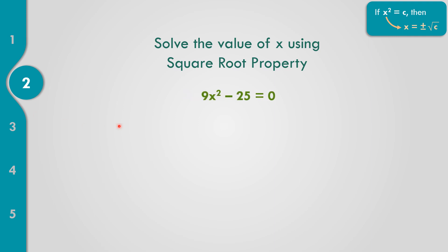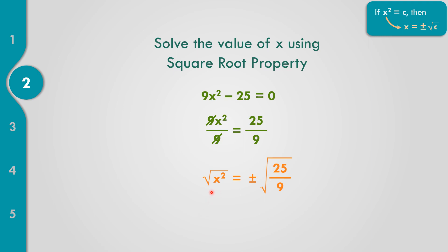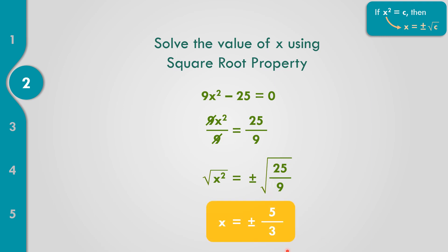Example 2: 9x squared minus 25 equals 0. Move negative 25 to the right — it becomes positive 25, giving 9x squared equals 25. Since the coefficient of x squared must equal 1, divide both sides by 9: x squared equals 25 over 9. Write the square root on both sides: x equals positive negative square root of 25 over 9, which is positive negative 5 over 3. The solutions are 5 over 3 and negative 5 over 3.